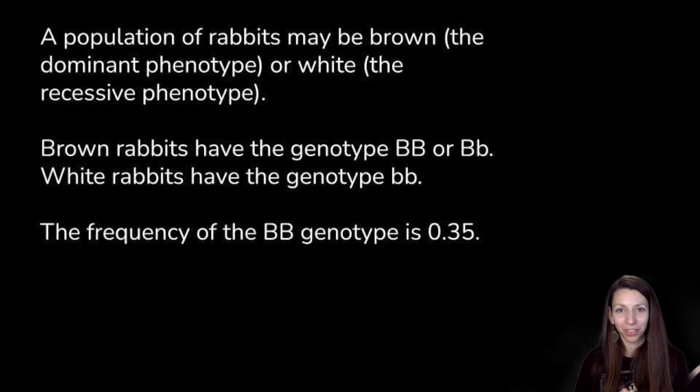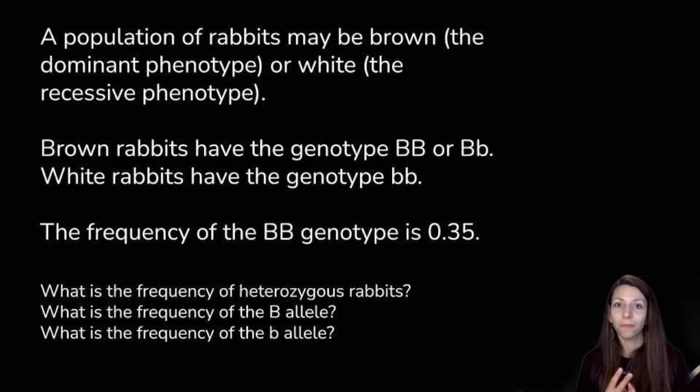Let's look at one more practice problem. A population of rabbits may be brown (the dominant phenotype) or white (the recessive phenotype). Brown rabbits have the genotype BB or Bb. White rabbits have the genotype bb. The frequency of the BB genotype is 0.35. Let's figure out the frequency of heterozygous rabbits, the frequency of the B allele, and the frequency of the b allele.